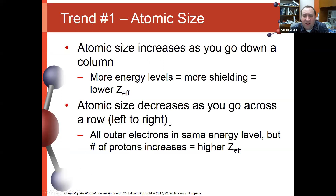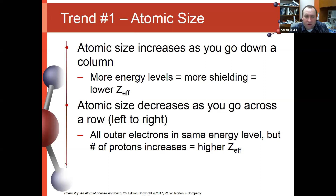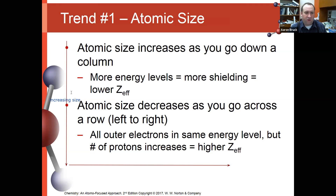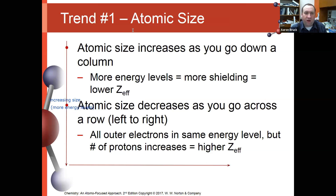The first trend we're going to look at is atomic size. Atomic size has two general trends. There is a trend going up and down the periodic table, and a trend going from left to right. The trend as we go from the top to the bottom of the table is an increasing size, and the primary reason for that is we have more energy levels that are capable of doing greater amounts of shielding.